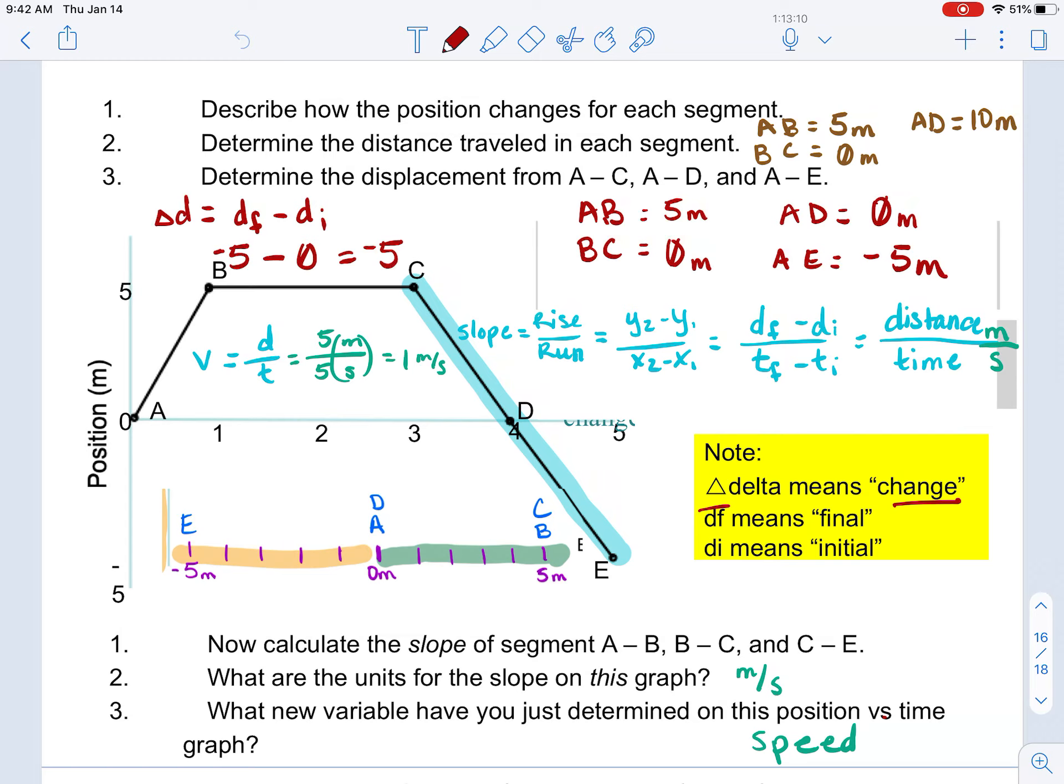If I look at segment AD, notice that that is also zero. Now, my object actually moved, but my position A and my position D are actually both at the same location. If I look at the little map that I have added below the graph here, A and D are listed both at the zero meter mark. So, that's why we have a displacement of zero from final to initial position.